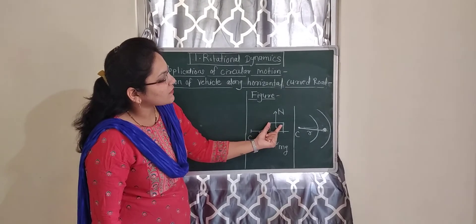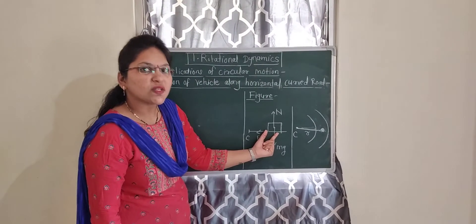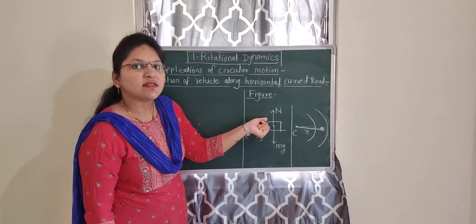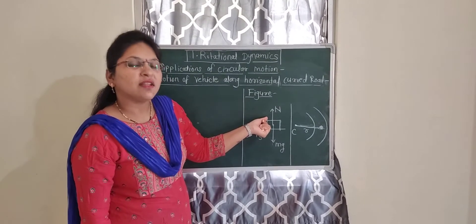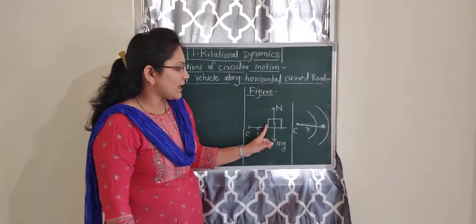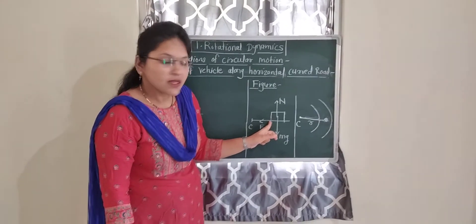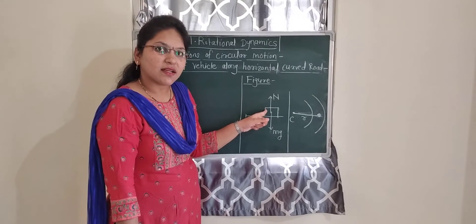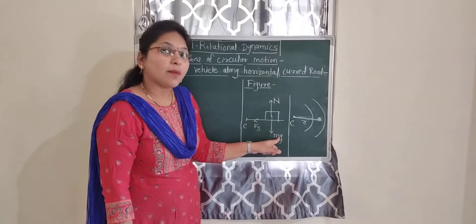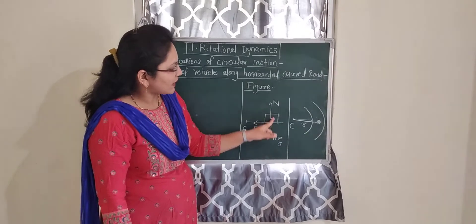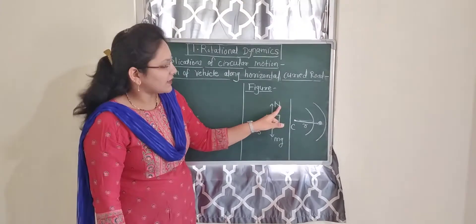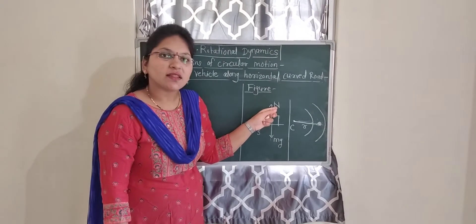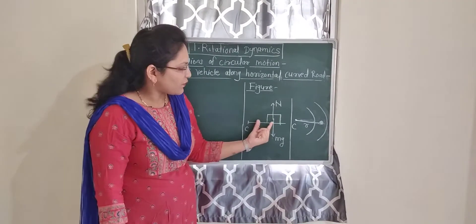The vehicle exerts weight on the road surface. By Newton's third law of motion — for every action there is an equal and opposite reaction — when the vehicle exerts weight (force mg) downward on the surface, the surface exerts a normal reaction N upward on the vehicle. N is the normal reaction, which is perpendicular to the surface.